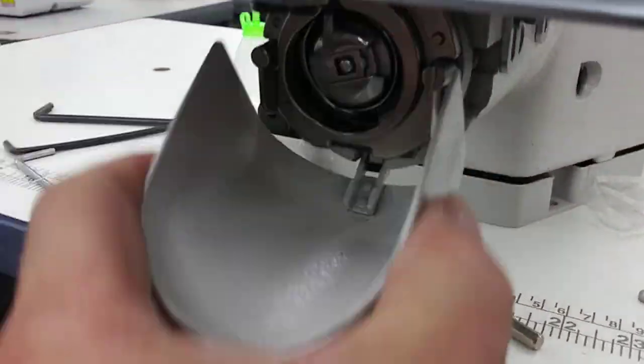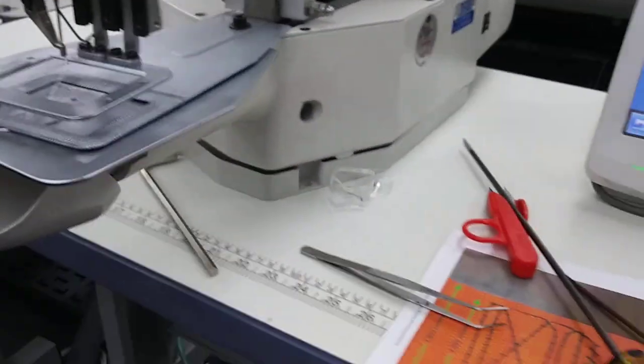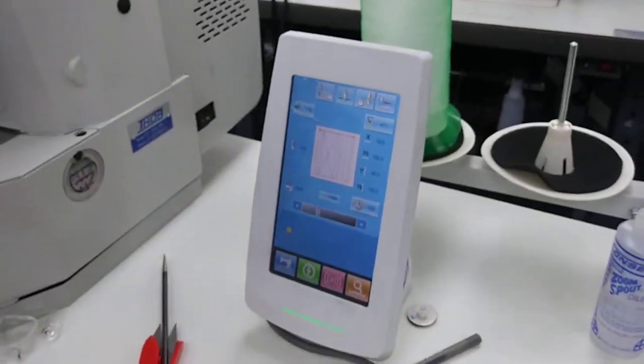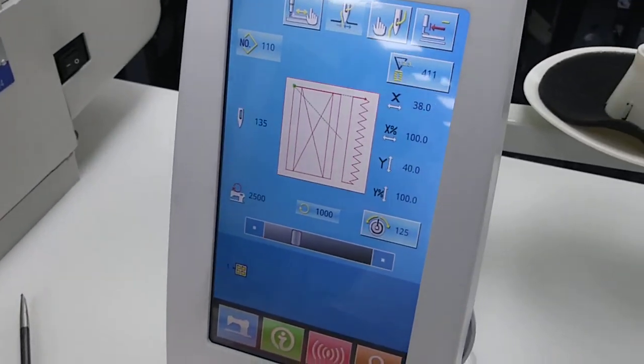Like I said, big hook and bobbin down there. What else? LCD touchscreen, electronic control panel.